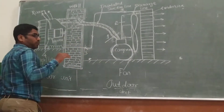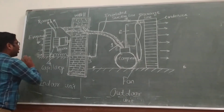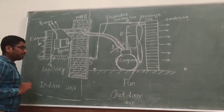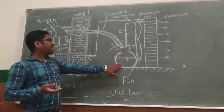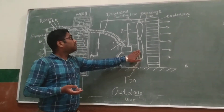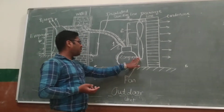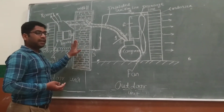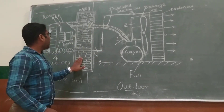The indoor cabinet kept inside the room contains a refrigerator coil, a fan or blower, and the capillary. Outside the room, the outer unit contains a compressor and the condenser with a fan. This is the outer unit and this is the indoor unit, separated by the wall, which is the divider between the indoor and outer unit.